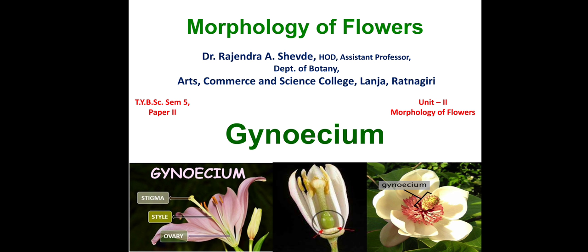On the first slide we can see three diagrams or three photographs which show you where exactly the gynoecium is situated. In the middle picture we can see the gynoecium shown with a circle. The basal green part is the ovary, the middle greenish part is the style, and the upper tip of the gynoecium is called the stigma. On the left side it is labeled with stigma, style, and ovary. The superior ovary condition is found in Magnolia flower.